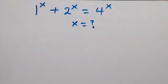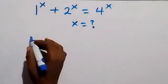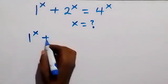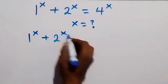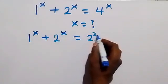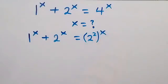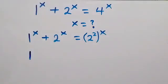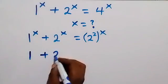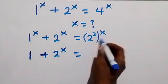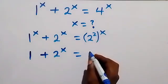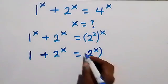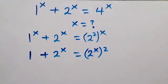Hello, you are welcome here. Let's solve this nice exponent equation. Let's write this again as 1 raised to power x plus 2 raised to power x equals to 2 raised to power 2x. Then from here, 1 raised to power x is 1 — any time you raise 1 to any number it's 1 — then plus 2 raised to power x. We can interchange this power from the law of indices, and this will become 2 raised to power x, then raised to power 2.